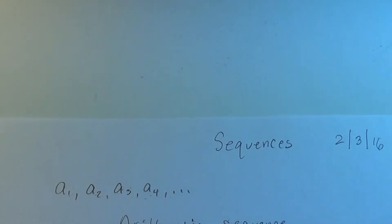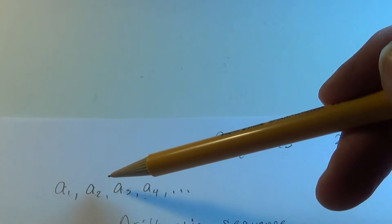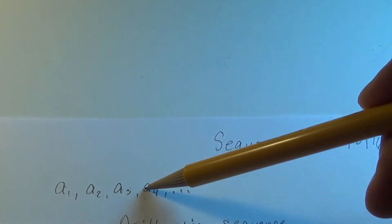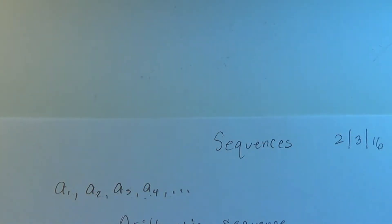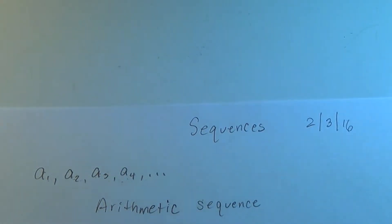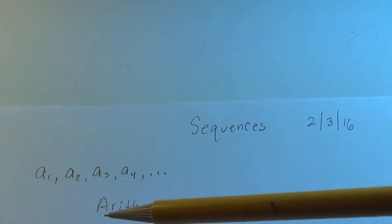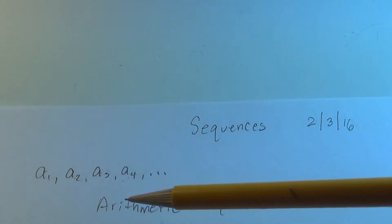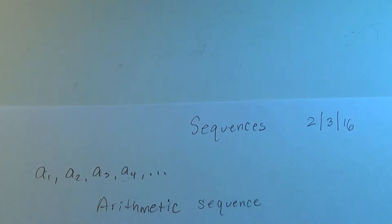When we have a special sequence where we add a certain number to get from one term to the next, and we add the same number each time, that has a special name. It's called an arithmetic sequence. That word looks like 'arithmetic,' but it's the adjective form. You can understand it better by looking at an example.